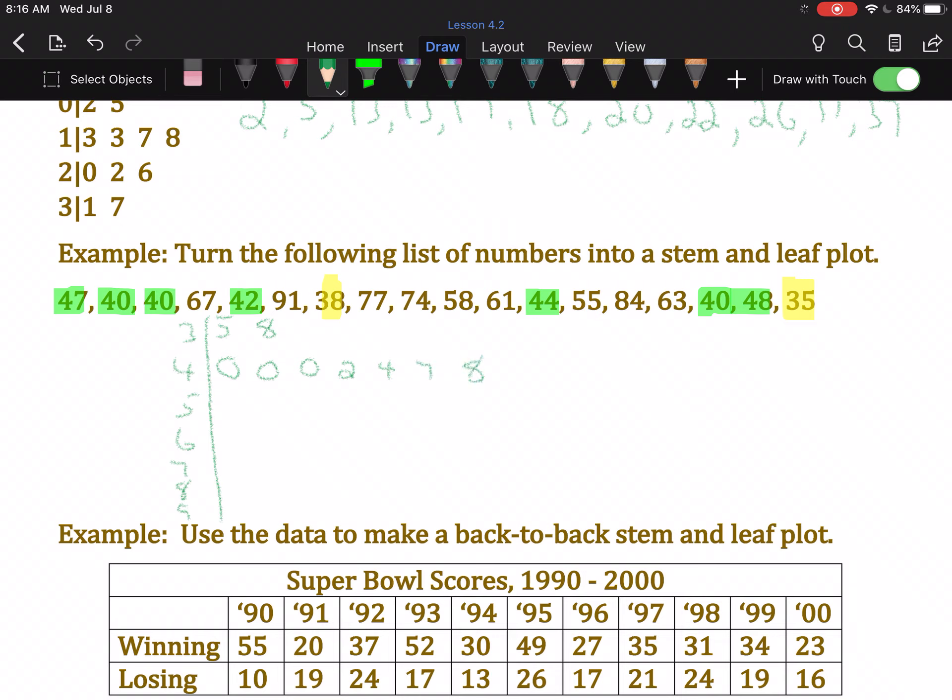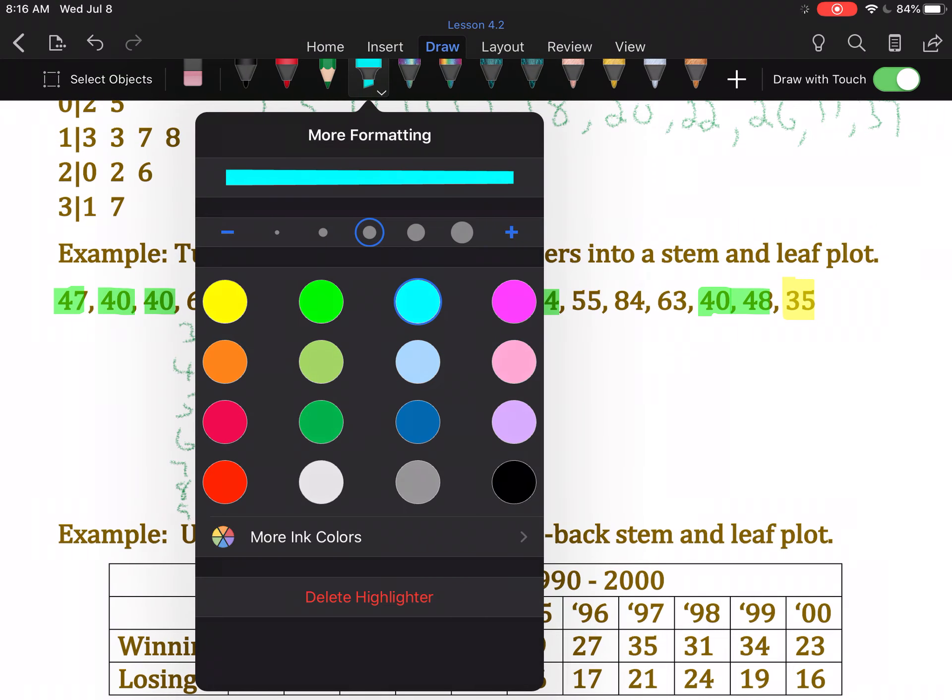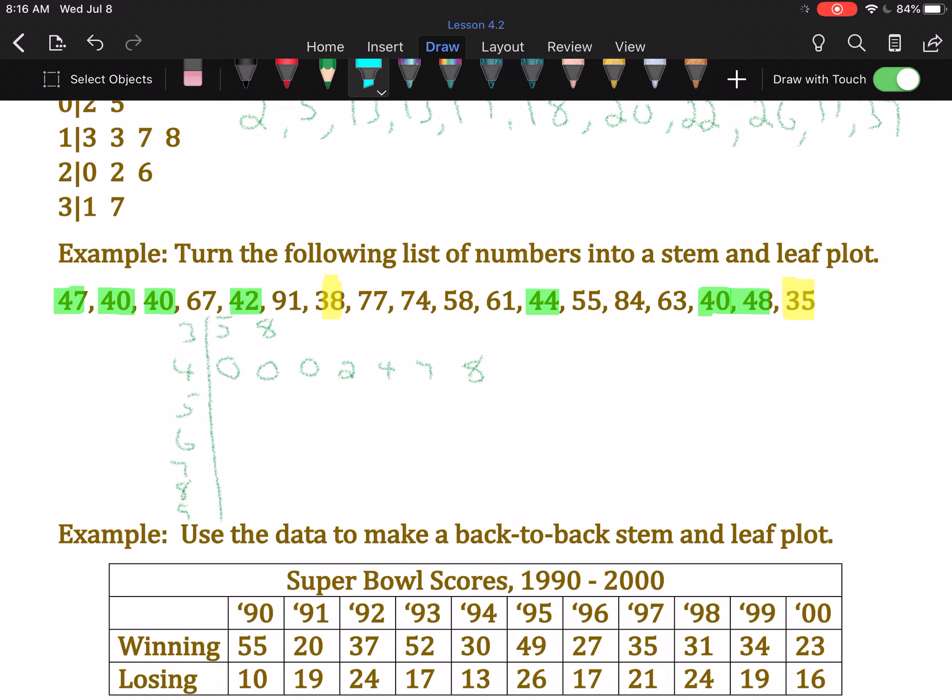I was just counting the number of numbers I wrote and the number of numbers I highlighted to make sure I got everything. Now, I'm going to go through and look for things in the 50s. And I only see 2. 55 and 58. So I put a 5 and an 8.